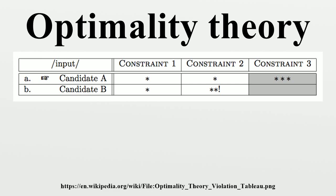Each row in a comparative tableau represents a winner-loser pair, rather than an individual candidate. In the cells where the constraints assess the winner-loser pairs, there is a W if the constraint in that column prefers the winner, an L if the constraint prefers the loser, and an E if the constraint does not differentiate between the pair. Presenting the data in this way makes it easier to make generalizations — in order to have a consistent ranking, some W must dominate all L's. Brasoveanu and Prince describe a process known as fusion and the various ways of presenting data in a comparative tableau in order to achieve the necessary and sufficient conditions for a given argument.